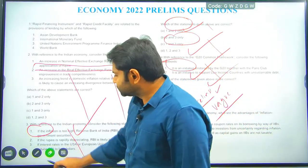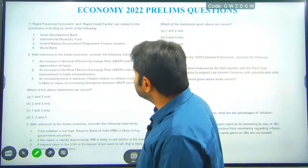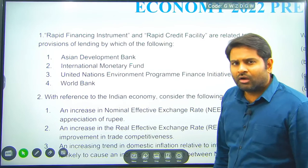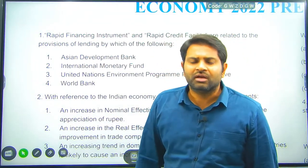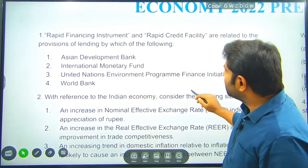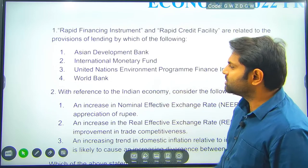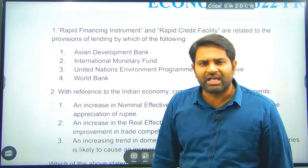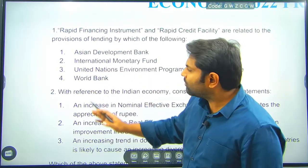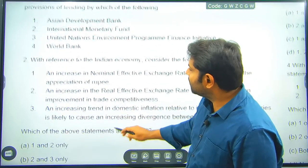Looking at the questions now — you don't need to answer anything, just see which part of the syllabus each question falls under. The first question: 'Rapid Financing Instrument and Rapid Credit Facility are related to the provisions of lending by which of the following institutions?' — Asian Development Bank, IMF, UNEP, or World Bank? This is a credit window from the external sector, related to fiscal policy.